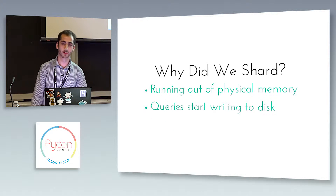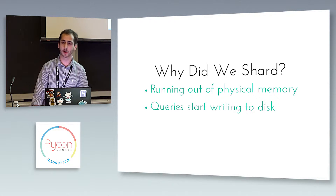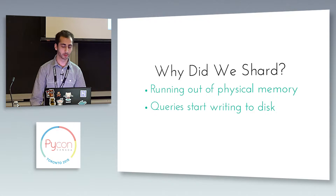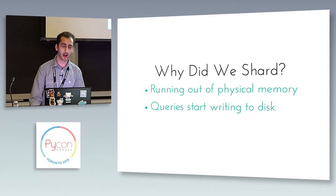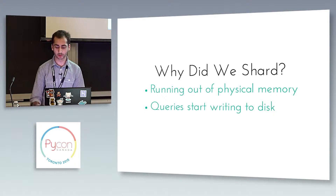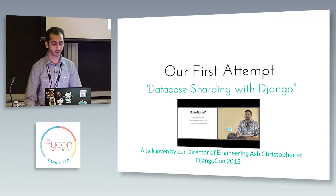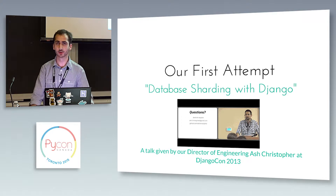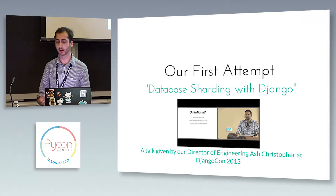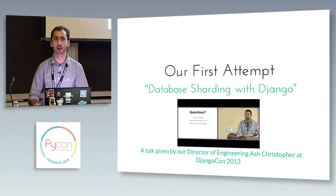So why did we shard? We were running out of physical memory, and even more than that, we started doing queries and they would be writing to disk, which makes your application really slow — and users don't really like that. We went through a whole painstaking process. At DjangoCon 2013, our Director of Engineering, Ash Christopher, gave a talk about how we sharded with Django. I'm going to start by talking about the problems we had with our original implementation, and then get into our new one.